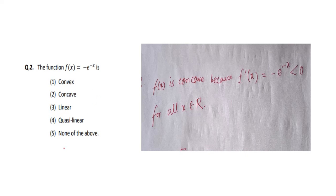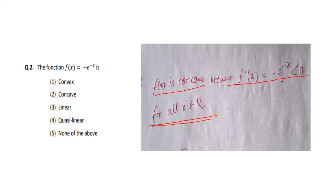To determine concavity or convexity, we look at the second derivative — or we can check the first derivative's sign. Here f′(x) = −e^(−x), which is negative for all values of x. Since e^(−x) is always positive, −e^(−x) is always negative, so the function is concave. Option number 2 is the answer.